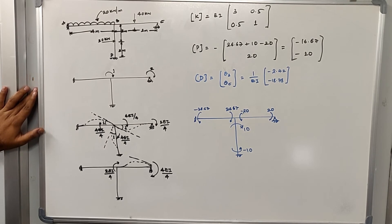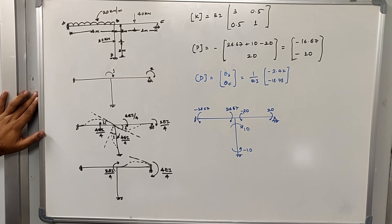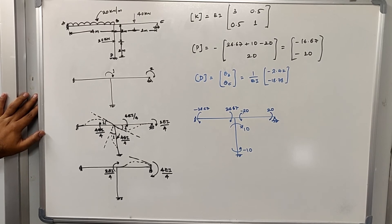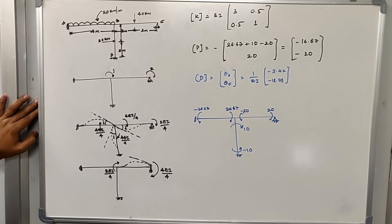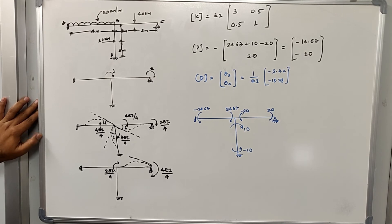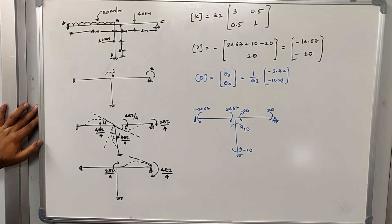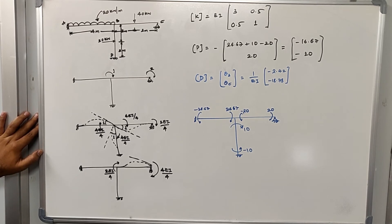If you encounter difficult sway or non-sway frame problems from question papers, you can send them to me and I will solve them here. Looking at this frame, we identify the kinematic indeterminacy. Joints A and D are fixed, so they have no degrees of freedom. The degrees of freedom exist at joints B and C, giving us theta B and theta C as the two coordinates.